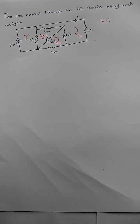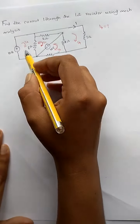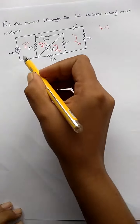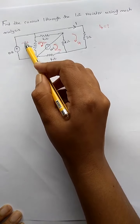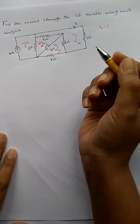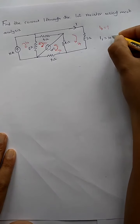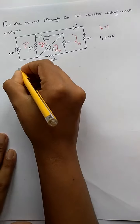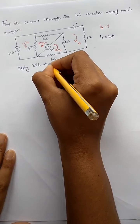In the next step, we have to apply Kirchhoff's Voltage Law to each mesh. Mesh 1 has a current source. I have already told you: if you have a current source, we can take that as our mesh current. This current source is isolated — it is not connected to the network — so I am setting mesh current I1 equal to the current source value, which is 10 amperes. So I do not need to apply KVL to mesh 1.